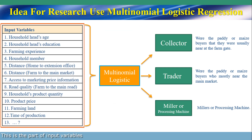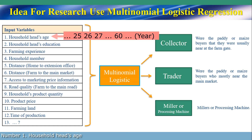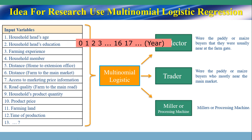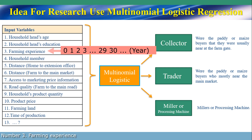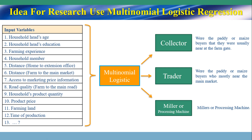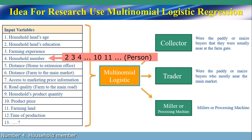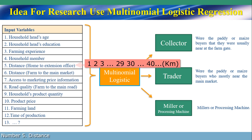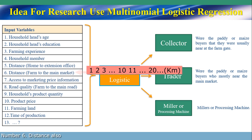This is the part of input variables and household head variables. Number 1: household head age. Number 2: household head education. Number 3: farming experience. Number 4: household member. Number 5: distance — this variable talks about farmer home location to the extension office. Number 6: distance also — this variable talks about farm location of the farmer to the main market.